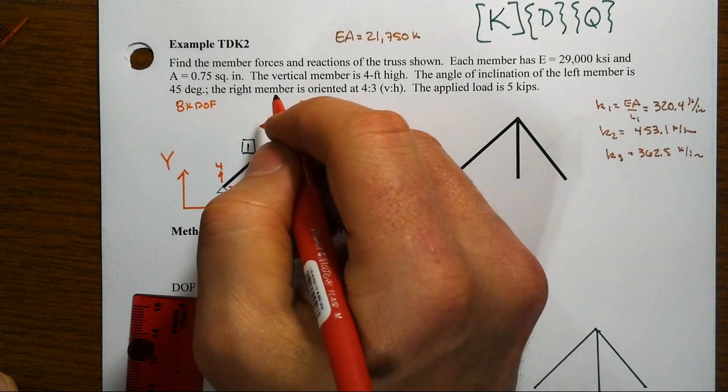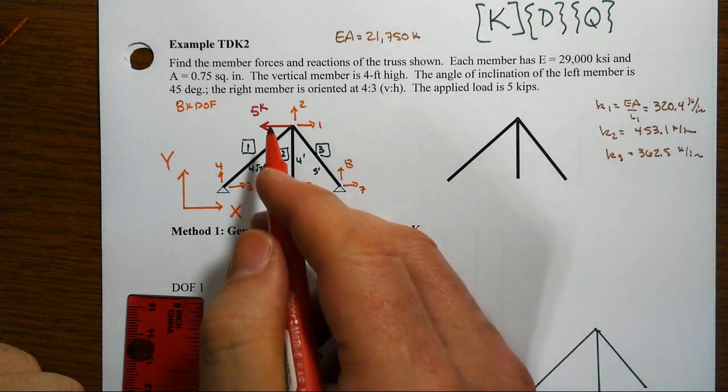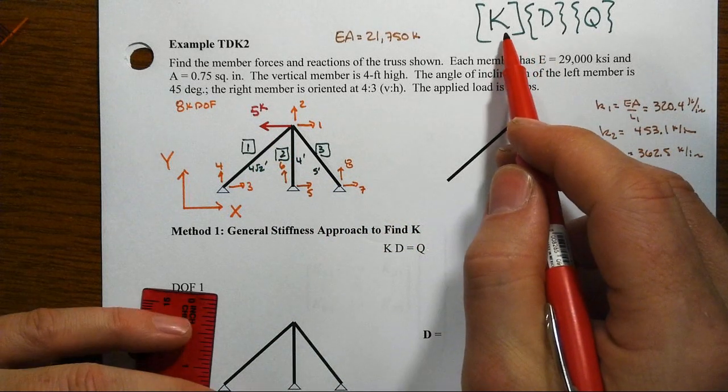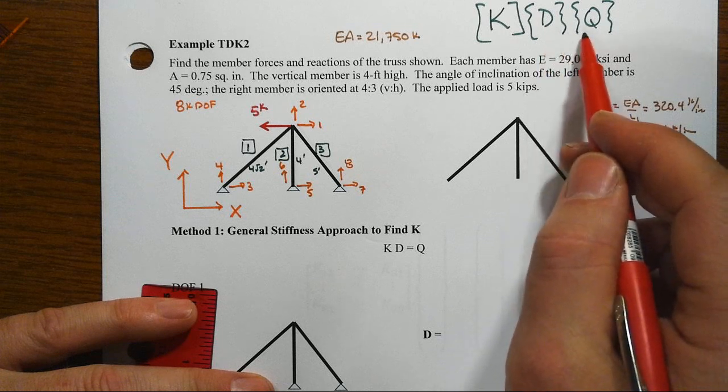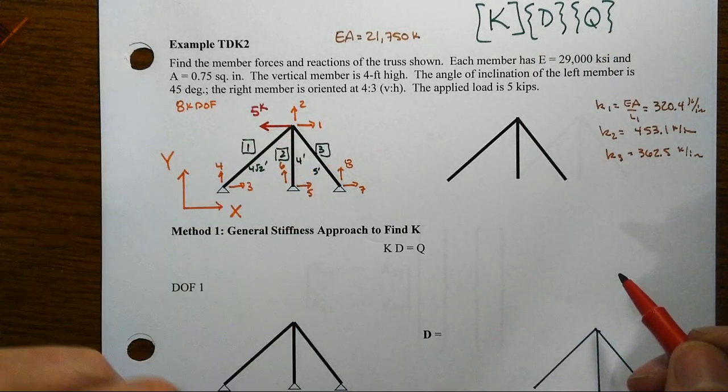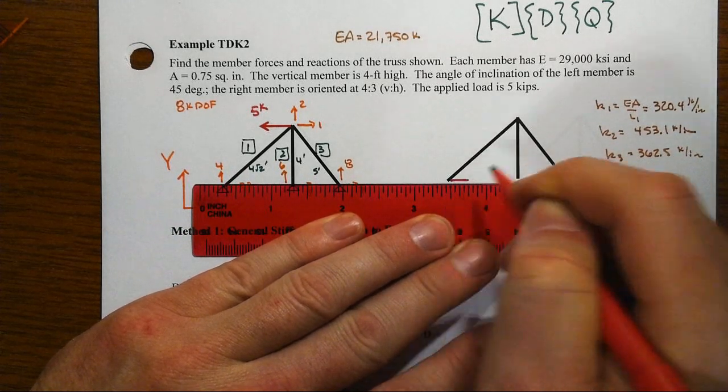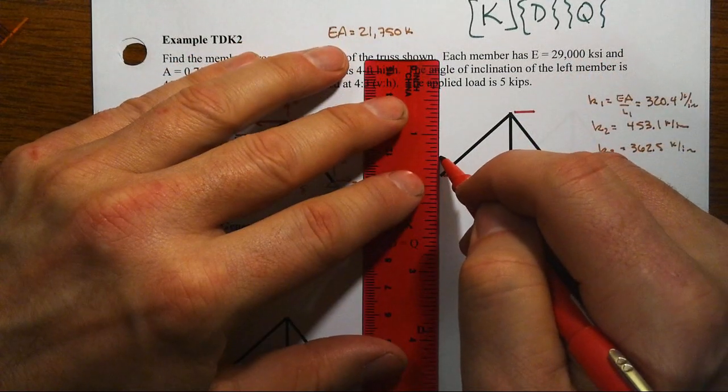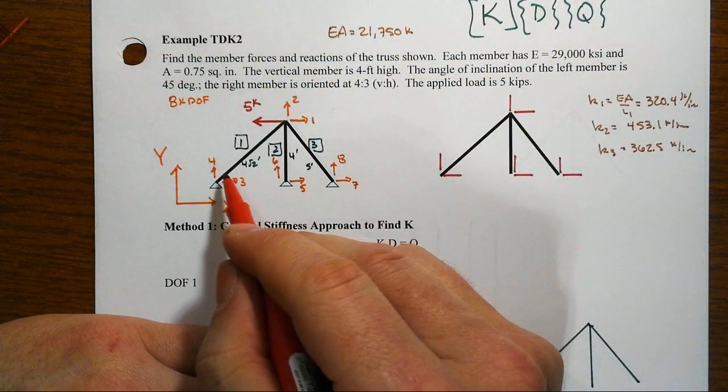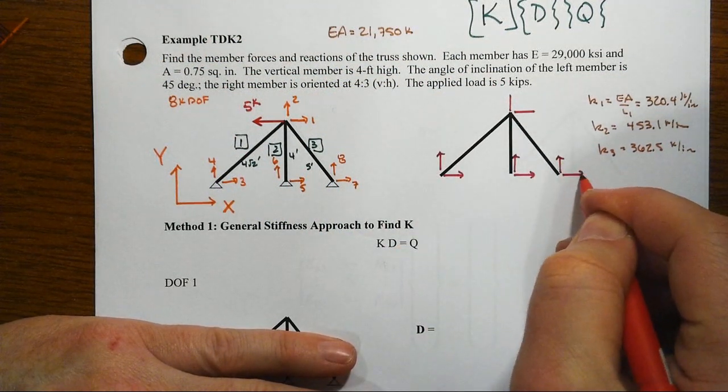We're interested, ultimately, in understanding how this member responds, finding the member forces and reactions to this five kip load that's applied to the left. All right, now, as we're going to go further onto this in the setup of coming up with these stiffness coefficients and all the terms that go into the nodal displacement vector and the nodal force vector, we need to take what we have here and translate it over into a model that thinks in the global coordinate system of all the forces that might be at the joints. Right now, we want to use the exact same set that we have over here in terms of the directions assigning positive.